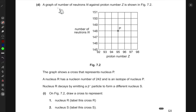Part (d): We have a graph of number of neutrons N against proton number Z shown in the figure. The proton number increases in this direction and neutrons in this direction. The graph shows a cross that represents nucleus P, which has a proton number of 95 and is located here.